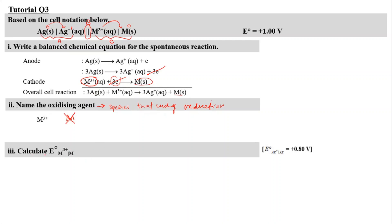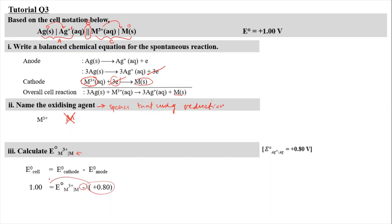For part 3, we calculate E°(M³⁺/M), which is the reaction at the cathode. Using E°cell = E°cathode − E°anode, our E°cell is given as +1.00 V. The E°anode (Ag⁺/Ag) is given as +0.80 V. Substituting: 1.00 = E°cathode − 0.80. Rearranging gives E°cathode (M³⁺/M) = +1.80 V.